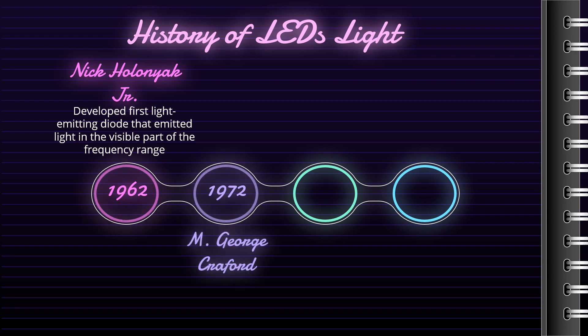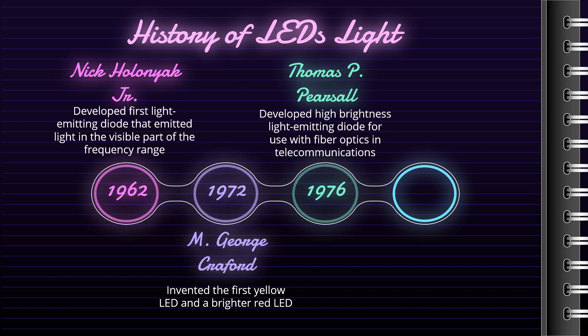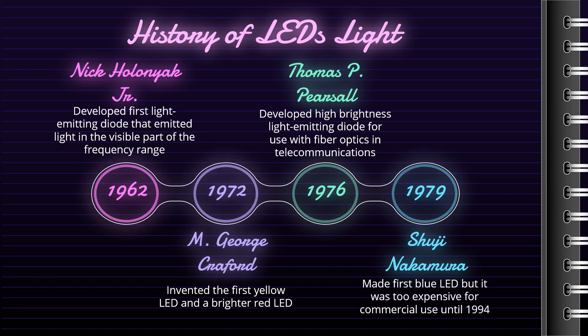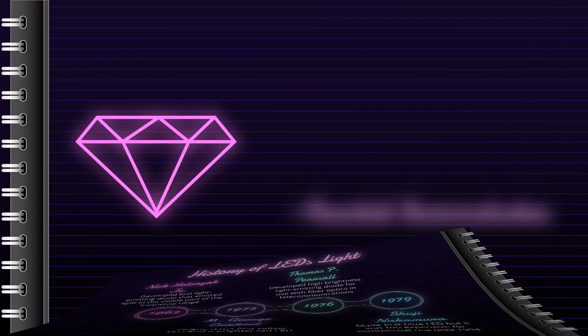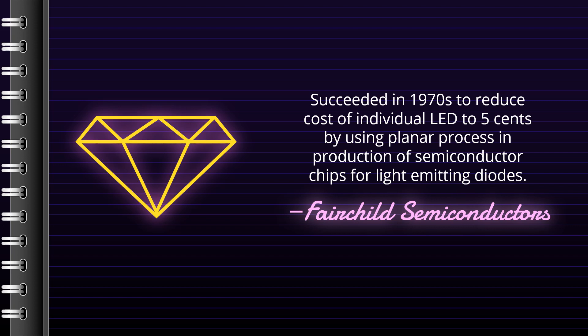In 1972, M. George Crawford, who was a graduate student of Holiniak, invented the first yellow LED and a brighter red LED. Thomas P. Pearsall developed a high-brightness light-emitting diode in 1976 for use with fiber optics and telecommunications. Shuji Nakamura of Nichia Corporation made the first blue LED in 1979, but it was too expensive for commercial use until 1994. At first, light-emitting diodes were very expensive, some US$200 per piece, and were used as indicators only in highly professional laboratory equipment. Fairchild Semiconductors succeeded in the 1970s to reduce the cost of individual LED to 5 cents by using a planar process in production, making LED into a commercial product with a variety of uses.